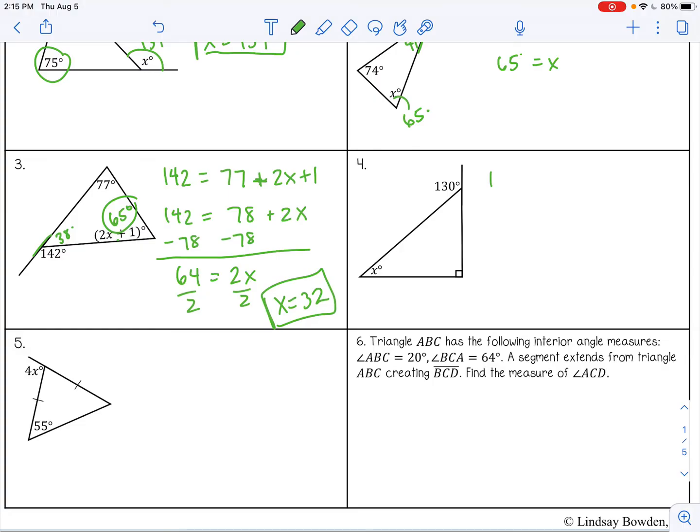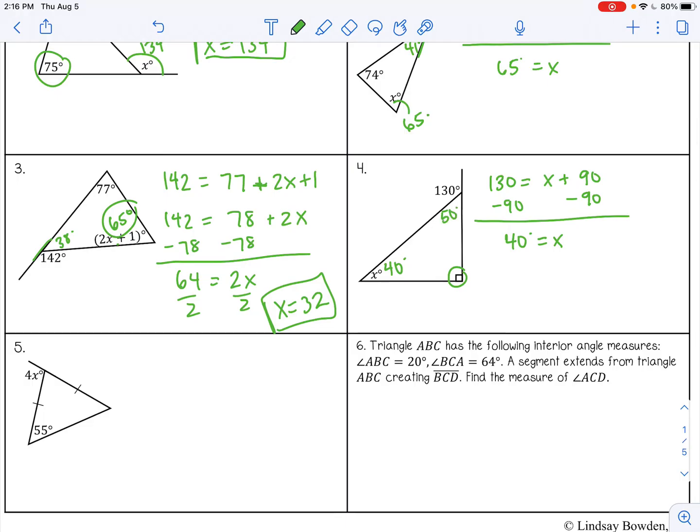Number four, exterior angle equals the sum of the two interior angles. Remember, that's 90 degrees. So minus 90 minus 90. So that would be 40 degrees. So this is 40, which would make this 50.